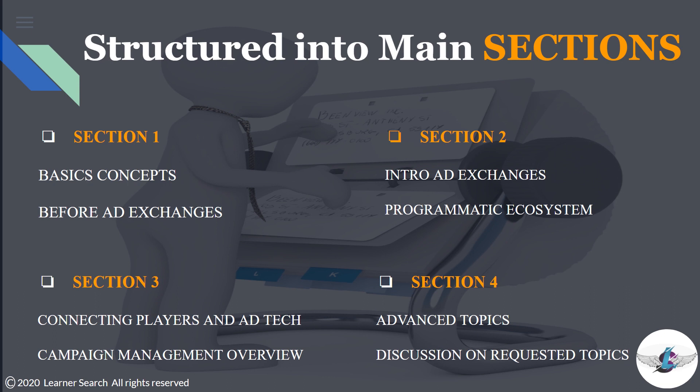To keep topics organized, we have divided them into four main sections. Section one covers basics — concepts you need to be aware of before getting into actual programmatic topics. This helps those completely new to the industry, while others can use it to refresh the basics. Section two focuses on actual programmatic topics, which are the ecosystem players, ad technology, and programmatic advertising.